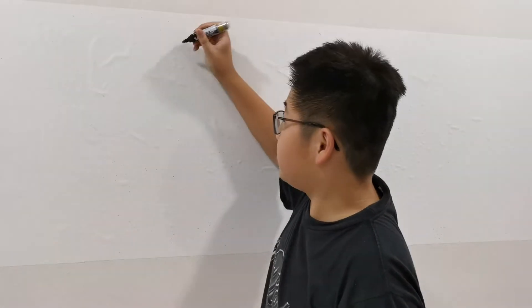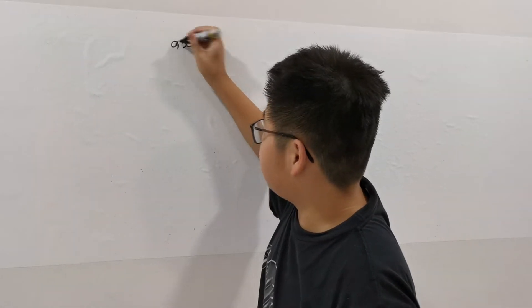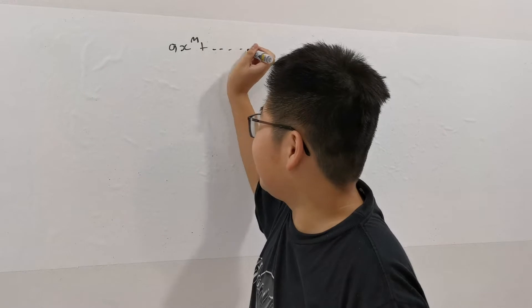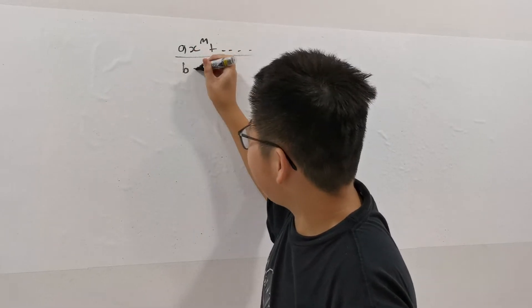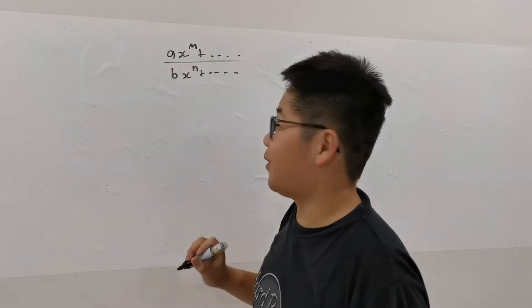Suppose your rational function is AX to the power of M plus blah blah blah over BX to the power of N plus another strange polynomial up here.